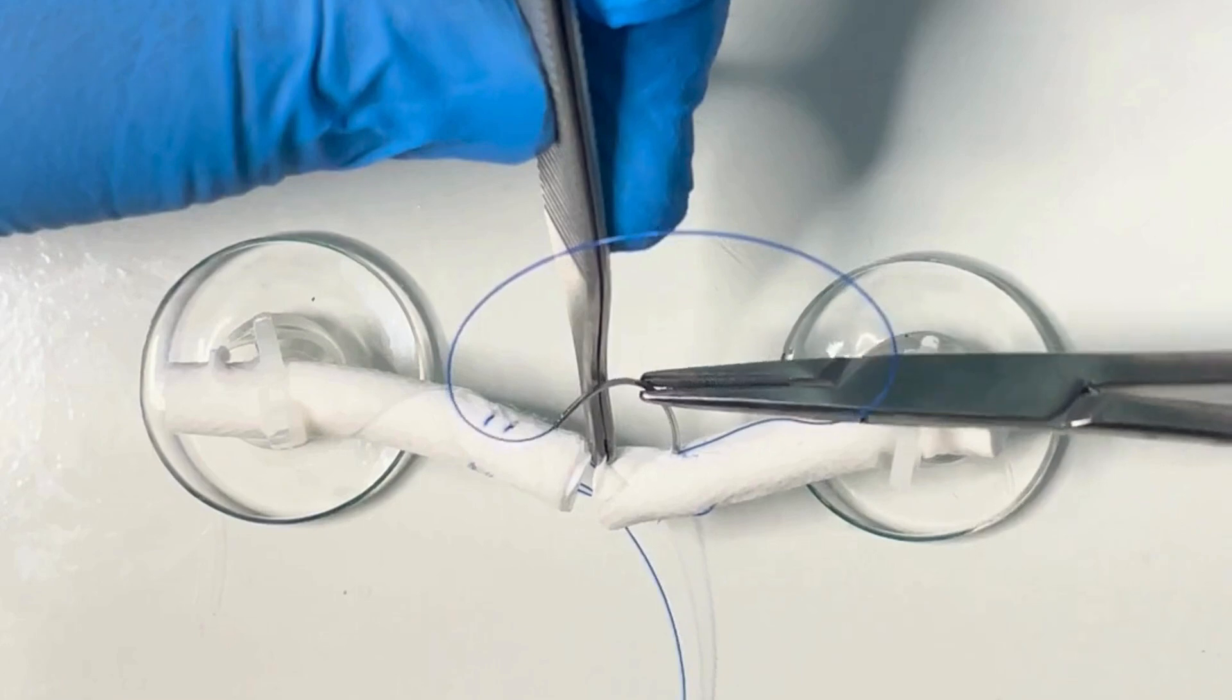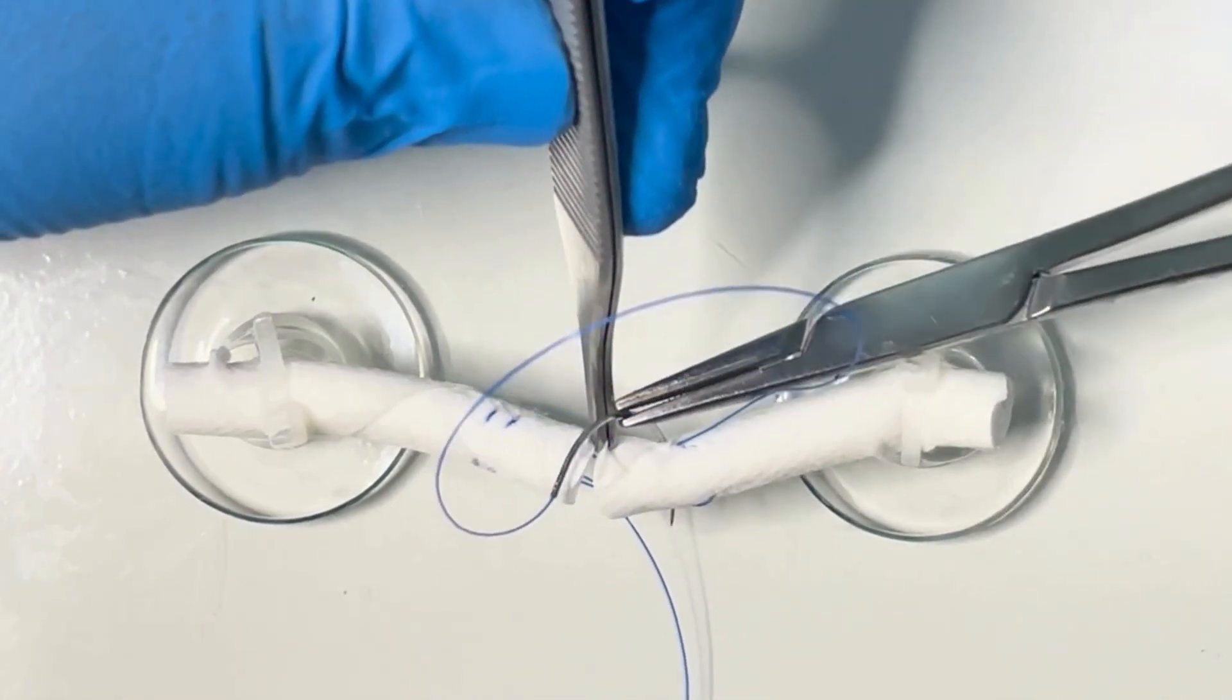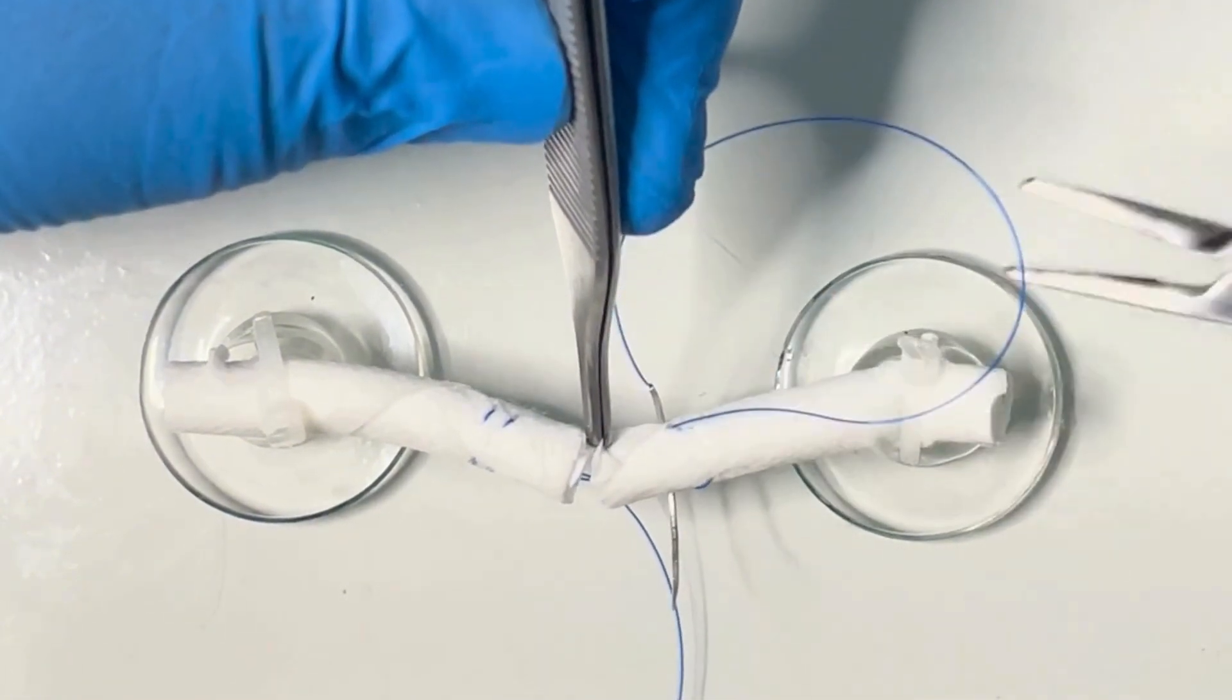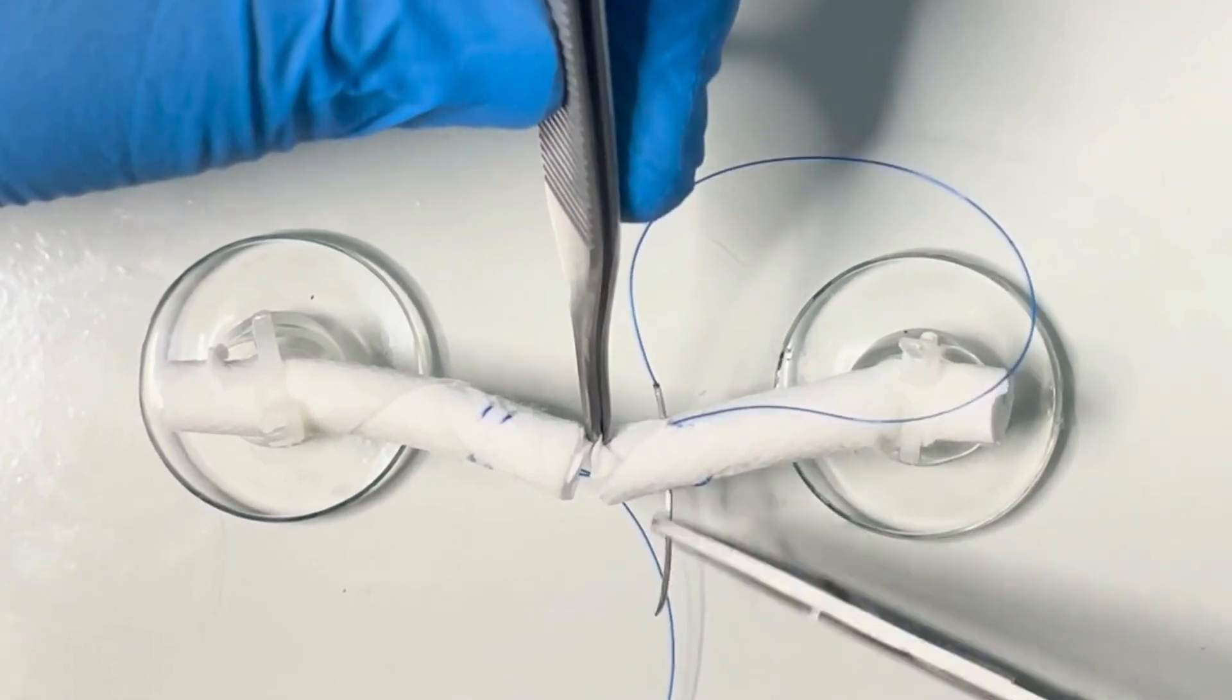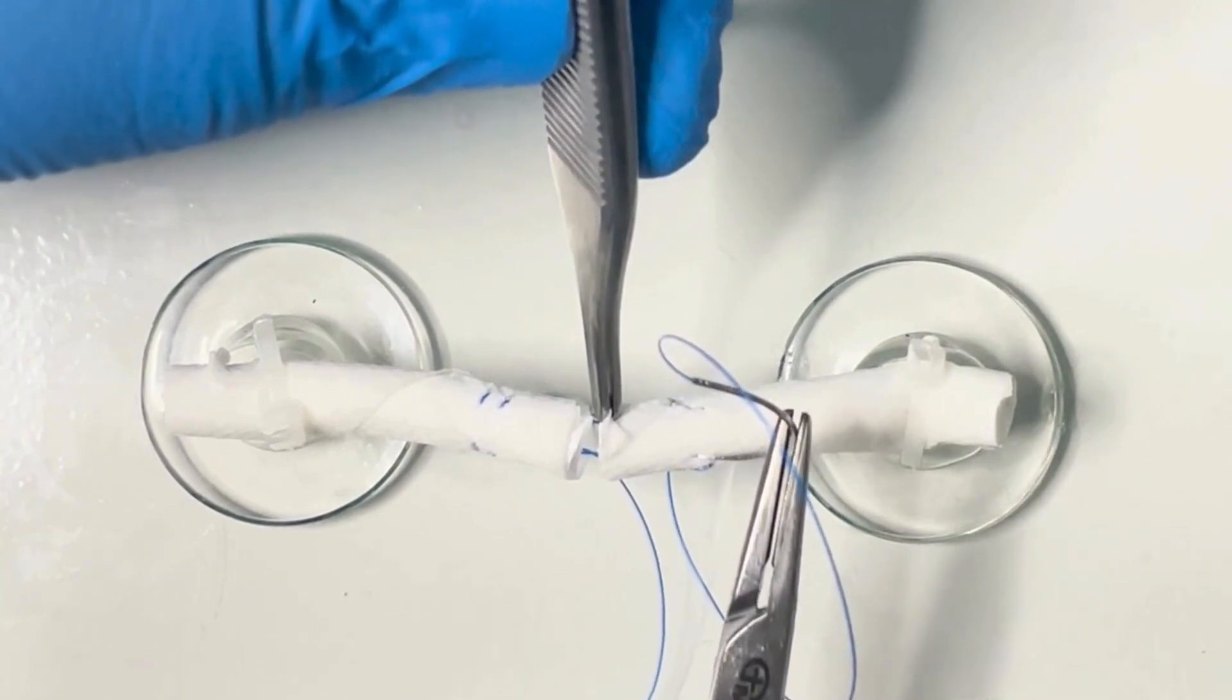You perform your epitendinous suture around this core repair to tidy up the repair site. The epitendinous suture adds 20% more strength.